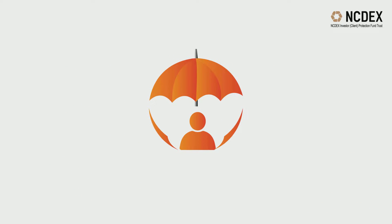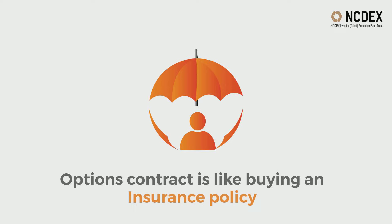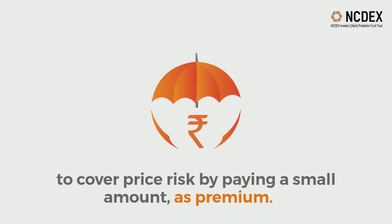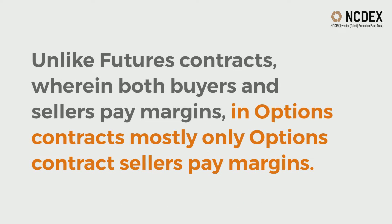An options contract is like buying an insurance policy to cover the price risk by paying a small amount as premium. Unlike futures contracts, wherein both buyers and sellers pay margins, in options contracts mostly only the option contract sellers pay the margins, stipulated by clearing houses like NCCL.